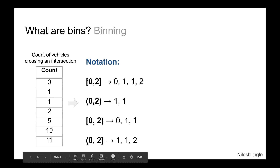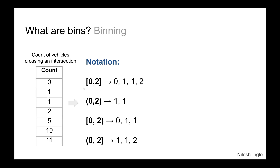Now let's look at the notation. The first notation uses square brackets on both the left and right side. This means the numbers just before and after the brackets are included in the bin. For example, if the bin is [0, 2], all numbers including zero, one, and two are included — so values 0, 1, and 2 all belong to this bin.